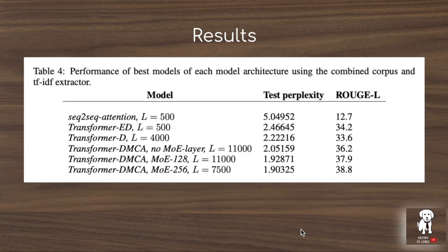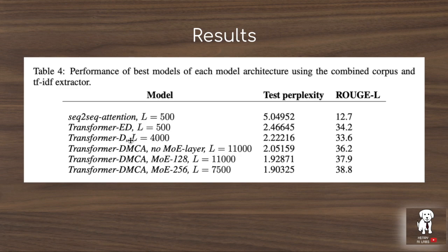This ablation further shows performance differences between different transformer parameters and the LSTM sequence-to-sequence architecture. The LSTM with attention has the highest perplexity and heavily underperforms the transformers. The transformer encoder-decoder attending over 500 tokens has decent perplexity, but dropping the encoder part allows attending over a longer sequence of 4,000 tokens with further improvement. Adding the memory-compressed attention approximation allows attending over 11,000 tokens. Adding a mixture-of-experts layer increases model capacity — with 256 hidden units the attended sequence is smaller but performance improves as a result of the higher capacity.